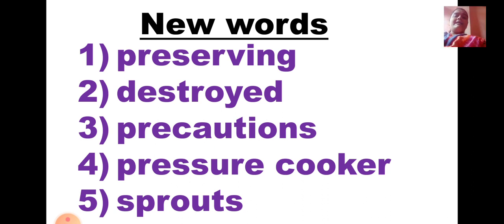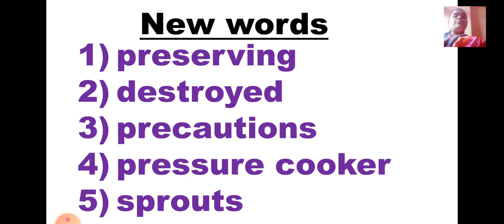Fourth one is P-R-E-S-S-U-R-E-C-O-O-K-E-R, Pressure Cooker. A pressure cooker is a utensil used for cooking food items. We can cook dal, various types of curries, and rice in it. Fifth one is S-P-R-O-U-T-S, Sprouts. Sprouts are those — Moong, Masur, or Vatanas — which we soak in water, and if we keep them for a longer time, sprouts develop on them.